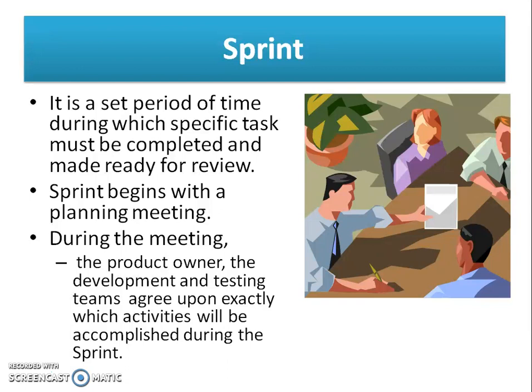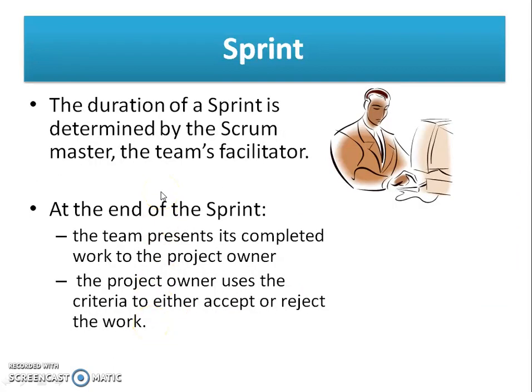What exactly is a sprint? It is a set period of time during which specific tasks must be completed and made ready for review. Sprints begin with a planning meeting. During the meeting, the product owner and the development and testing teams agree upon exactly which activities will be completed during the sprint. The duration of the sprint is determined by the sprint team. The team presents completed work to the product owner, who uses defined criteria to either accept or reject the work.